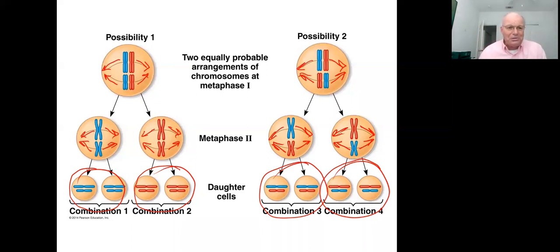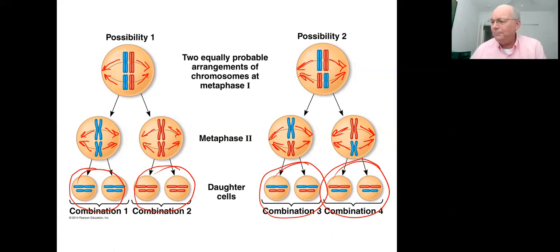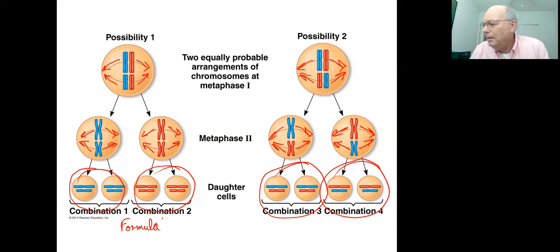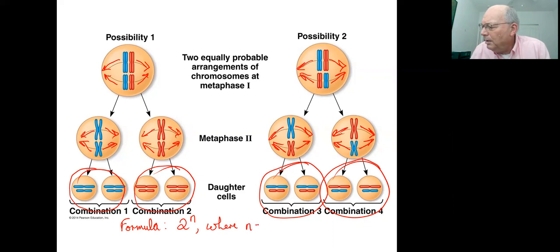You might ask, is there a pattern to this? Yes, there is actually a mathematical formula. The formula is 2 to the power n, where n equals the number of homologous pairs.